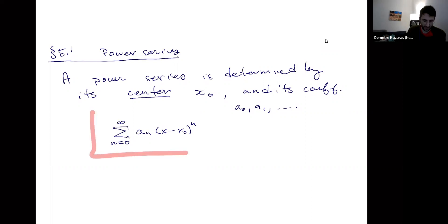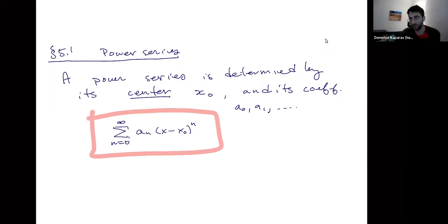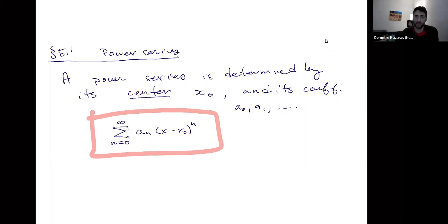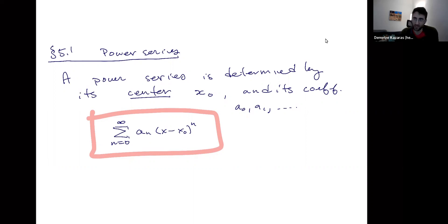We'll need some details on these sorts of expressions. Power series are, at first, just formal sums — an infinite sum of these little monomial pieces: x minus some given number x-naught, called its center, times some coefficients a-sub-n. Those are fixed real numbers. Those two pieces — the center and the coefficients — determine the power series.